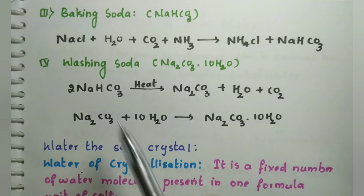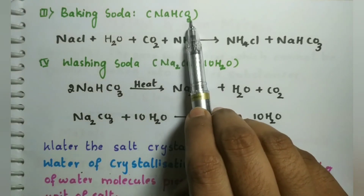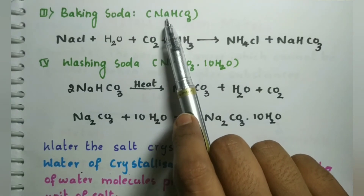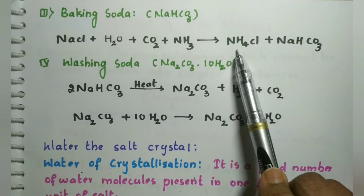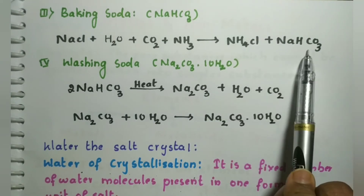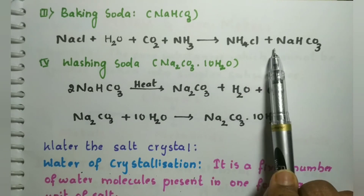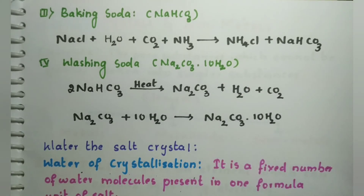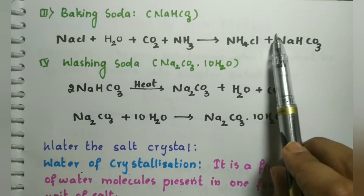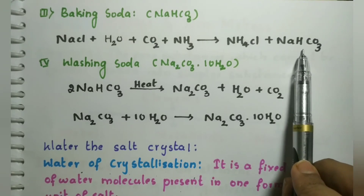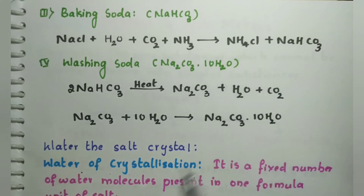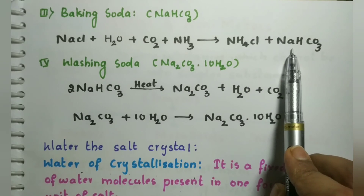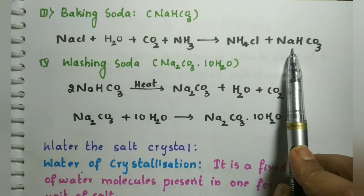The next product is baking soda, with formula NaHCO3, commonly used in cooking. It is formed by the reaction: NaCl + H2O + CO2 + NH3 → NH4Cl + NaHCO3. The uses of baking soda include preparation of sodium carbonate (washing soda) and as a raising agent in the baking industry.